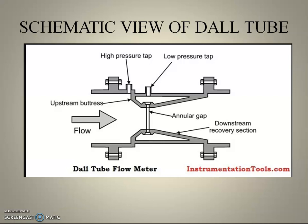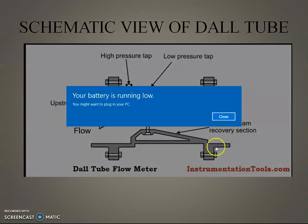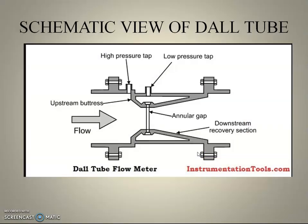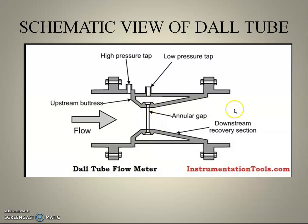In the converging section the pressure is high, and in the throat section the pressure is low. In the construction of the DAL tube, it consists of two tappings: one is the high pressure tapping and the other is the low pressure tapping. The inlet section and outlet section can be split by an annular split, which is used to measure the low pressure in the throat section.